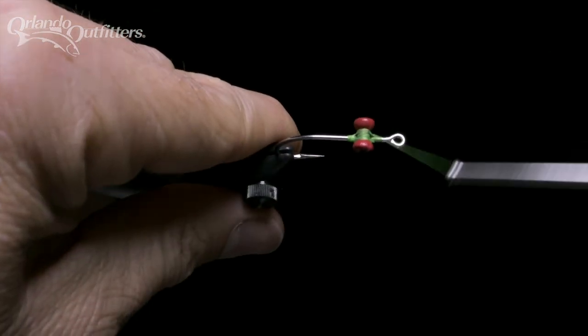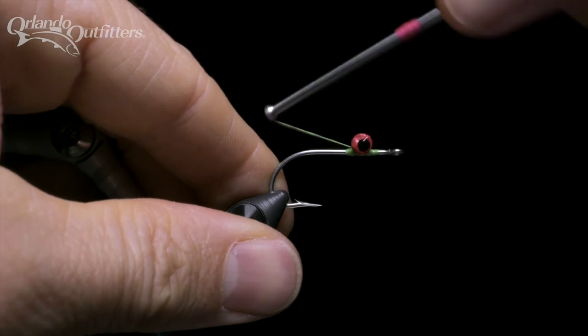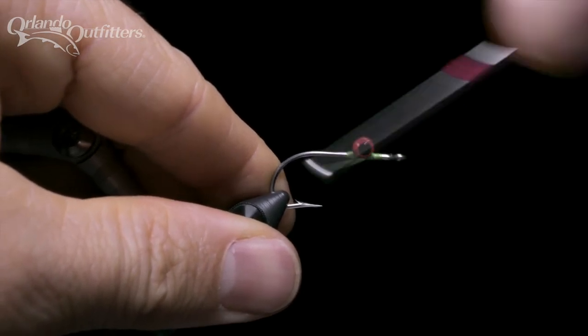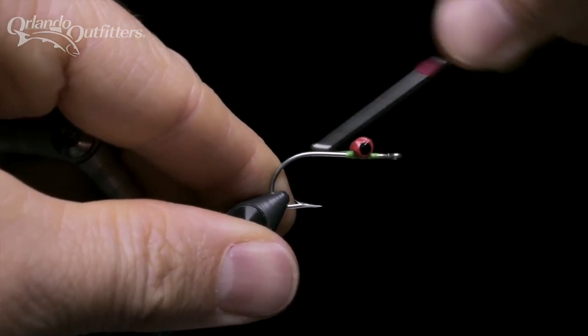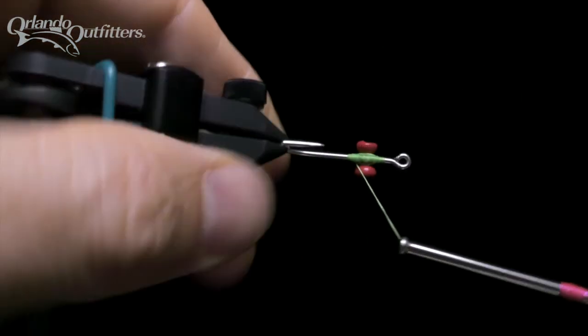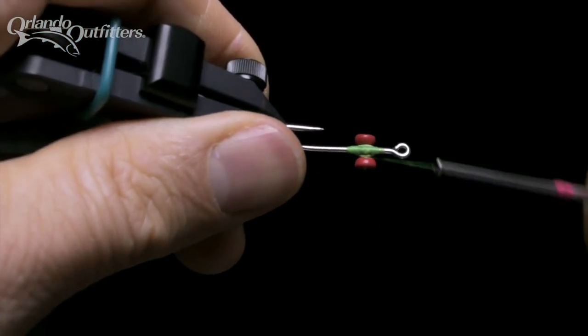The fourth wrap is between the eyes and the hook shank. Here, the thread is not wrapping over the hook or the eyeball, but over the thread wraps between the two. This draws the earlier wraps tighter, getting rid of any potential slack and really cinching the eyes down.